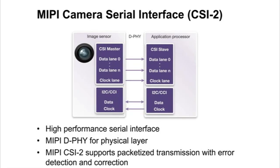The CSI-2 interface supports a variety of data and color space formats, encapsulates transfers in packets, and provides lane management, error detection and correction. Now let's go over the display serial interface, or DSI.